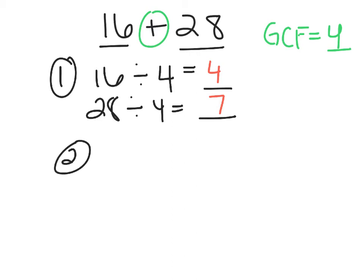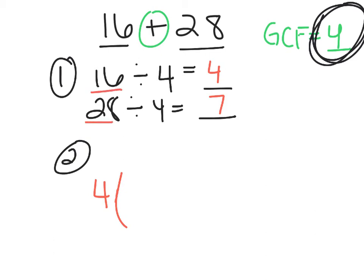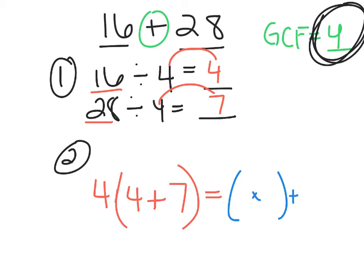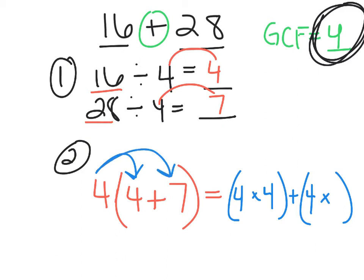The second step is to rewrite the expression 16 plus 28 in factored form. Factored form means the GCF is out front — it's the number factored out of both addends. So I put the 4 out front. I know that 4 pairs with 4, so I put a 4 inside my parentheses, then the addition sign in the middle, and then a 7, because 7 times 4 gets me to 28. Now I can rewrite this in expanded form by writing two sets of parentheses — a 4 in each — with 4 in the first parentheses and 7 in the second.